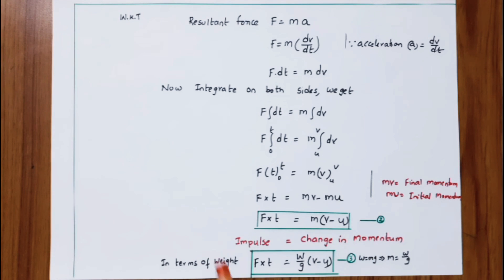Applying the limits, F × t = mv - mu, where mv is the final momentum and mu is the initial momentum. So F × t = m(v - u), which is the final momentum minus initial momentum. This is equation number two.